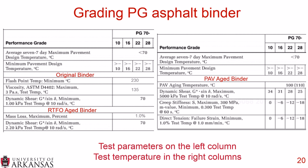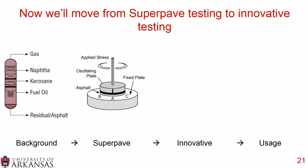That was a brief introduction to asphalt binder — there's a whole host of material and training modules out there. The SuperPave grading system is the most common in the United States, and many of its tests have also been used as the basis for innovative test methods. We'll now move from SuperPave testing into innovative testing.